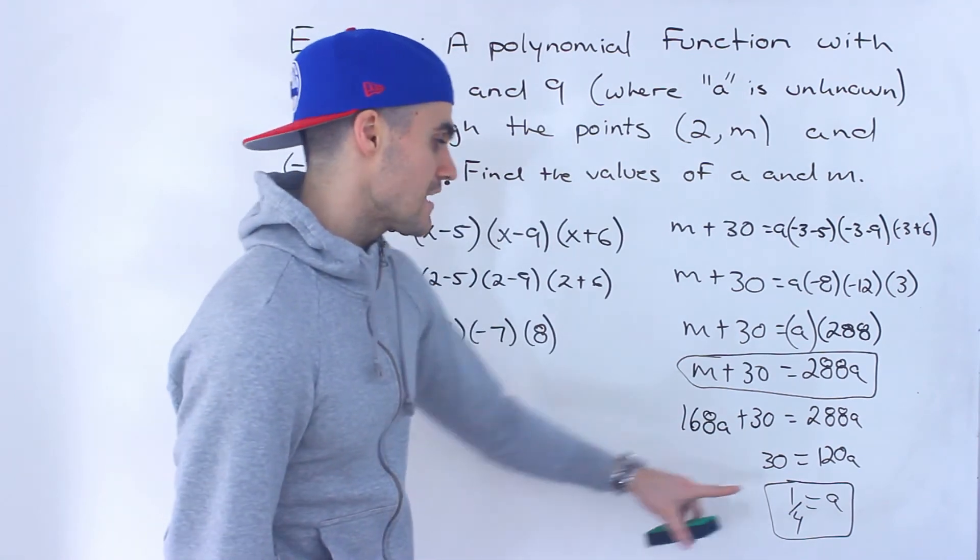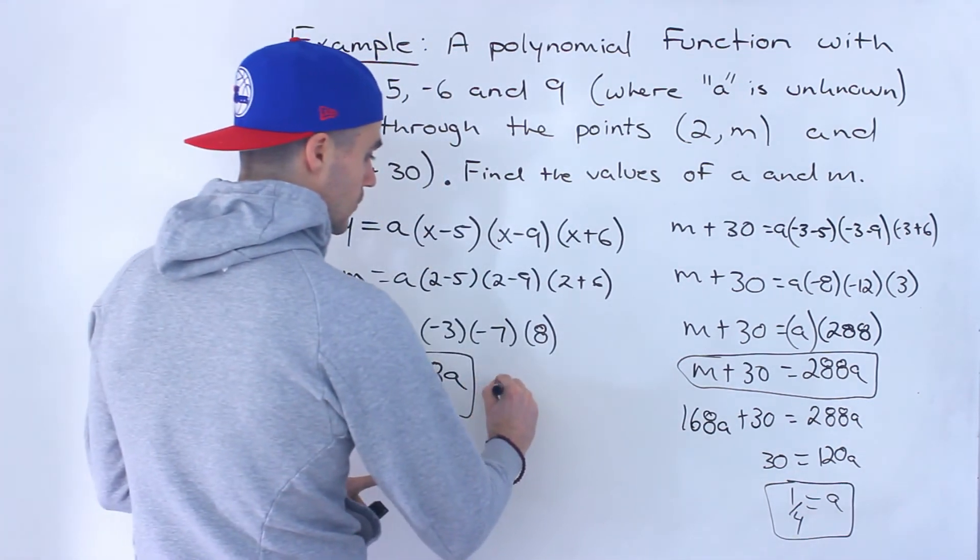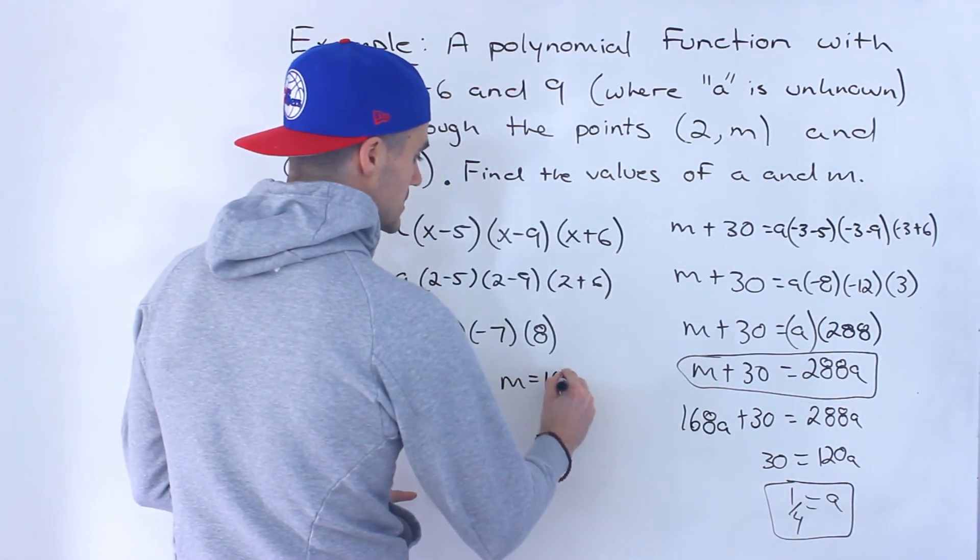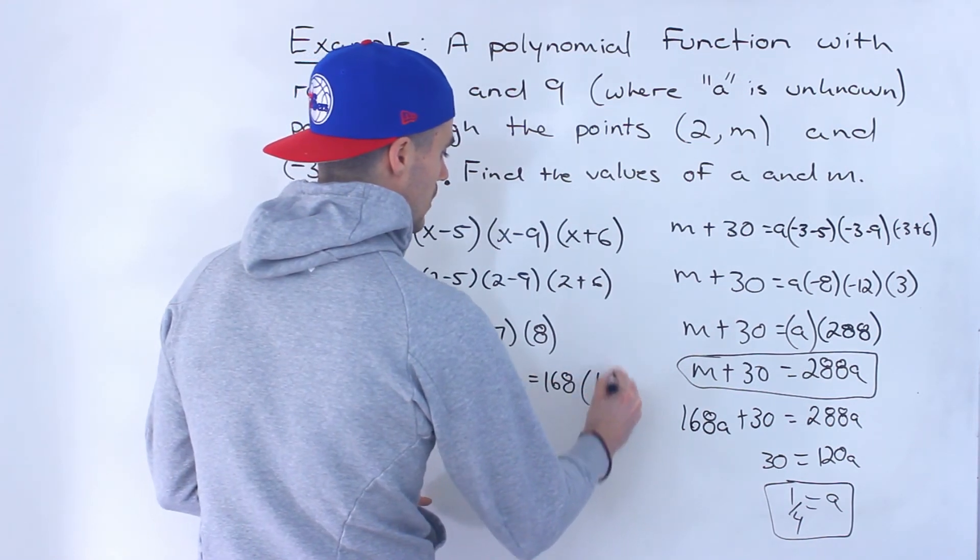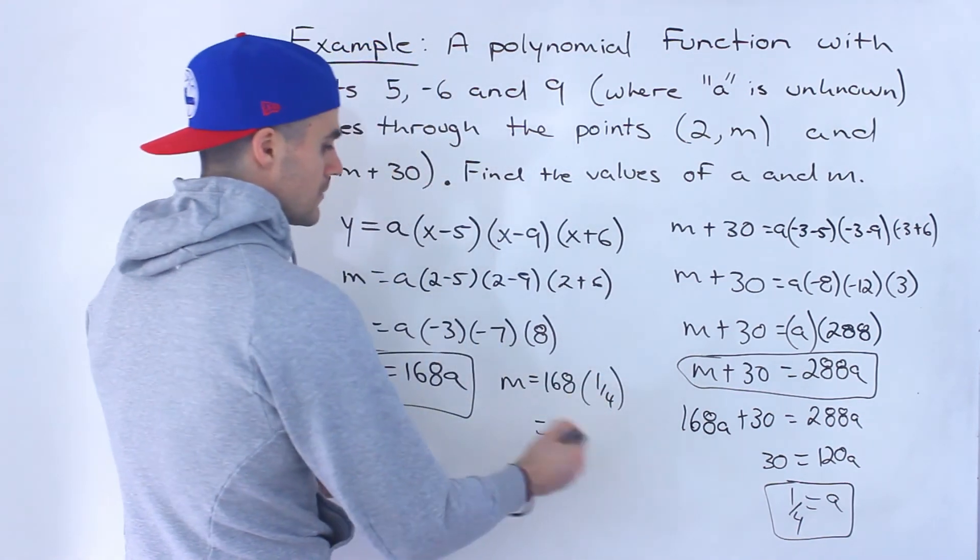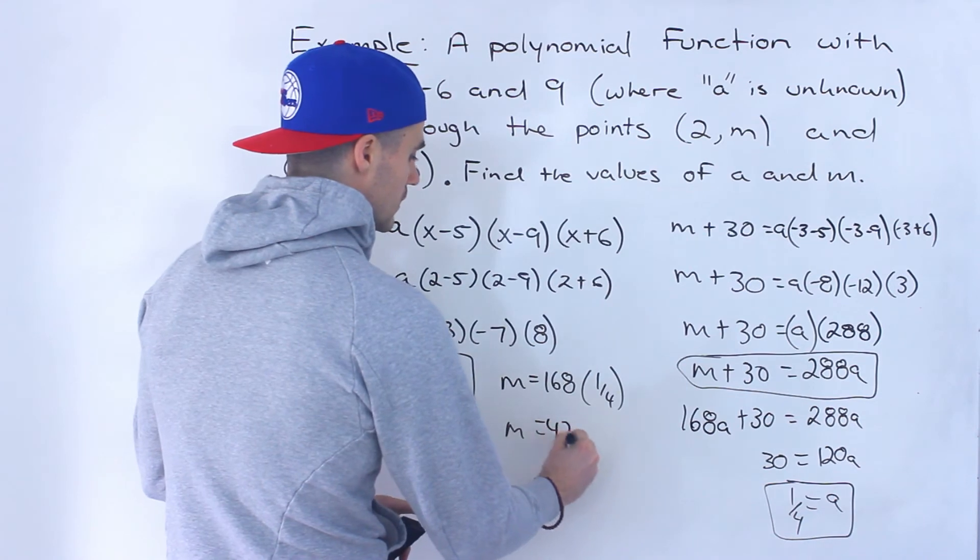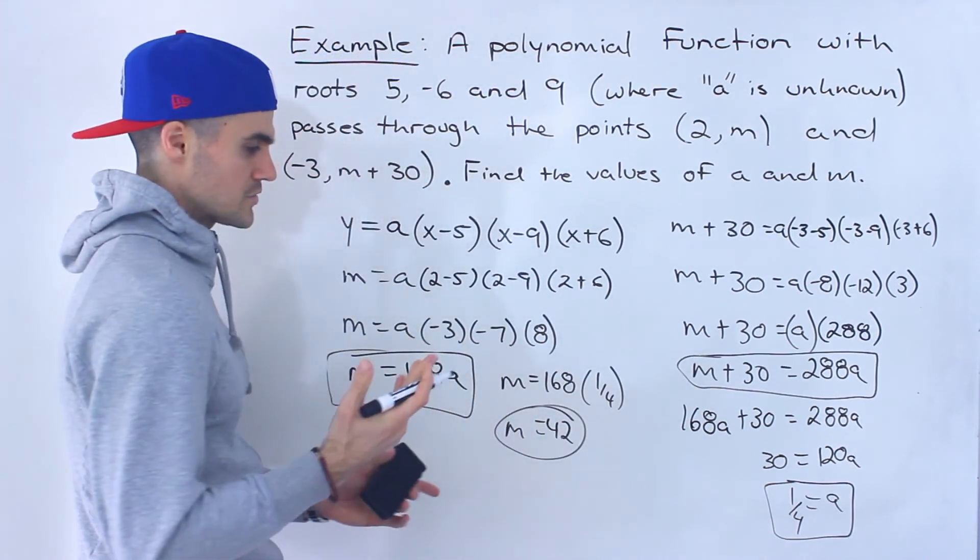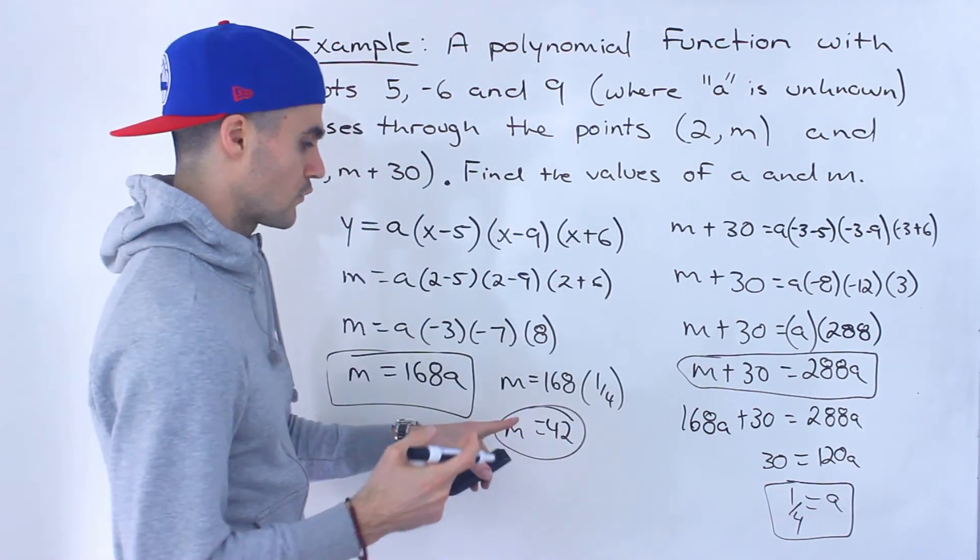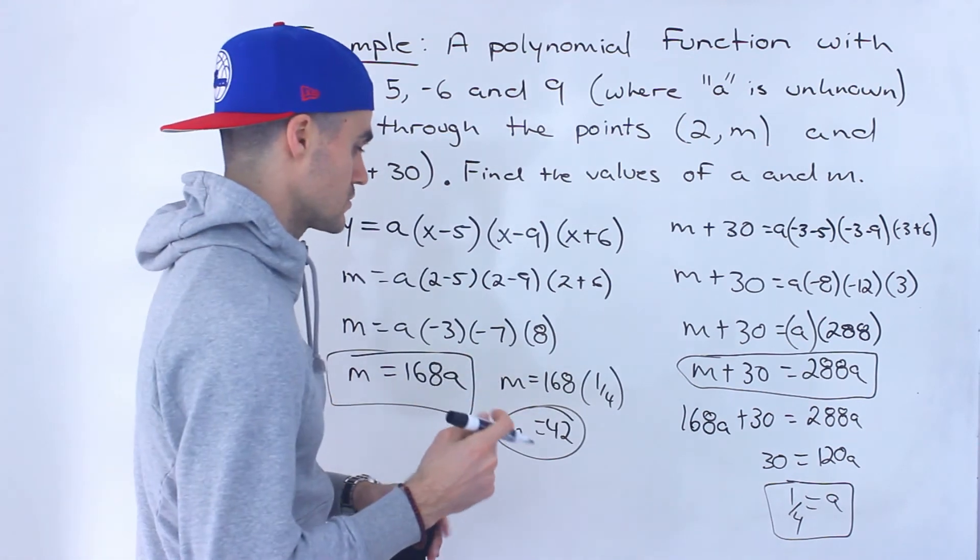And now that we know the A value we could plug it in here to get the corresponding M value. M would be 168 times 1 over 4 which would be like 168 divided by 4 which would give us 42. And those are the answers. A is equal to 1 over 4. M is equal to 42.